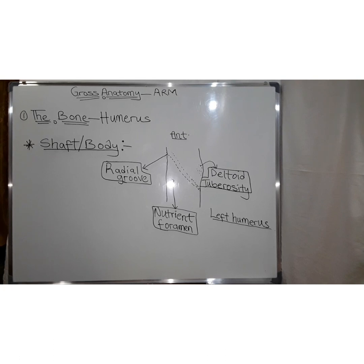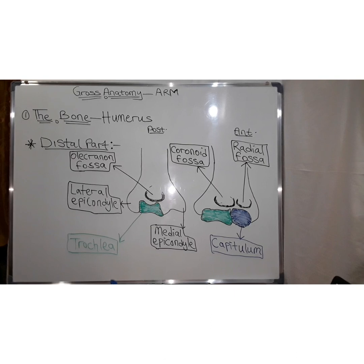The next region of this bone is the shaft or body. On its lateral side it has the deltoid tuberosity, and posteriorly a radial groove. At the same level a nutrient foramen is also seen.